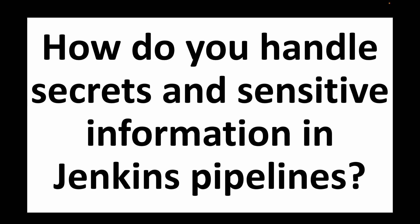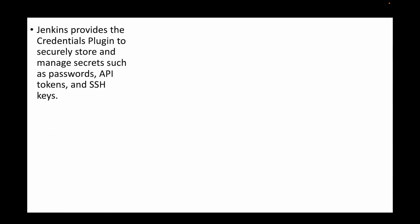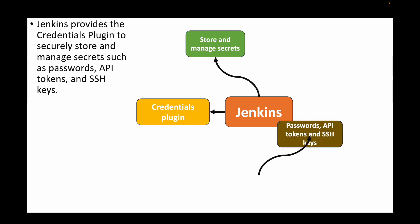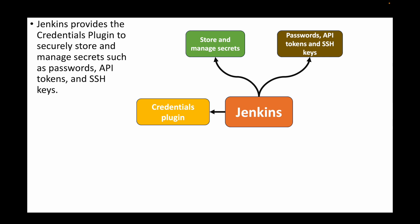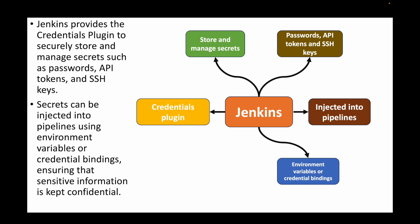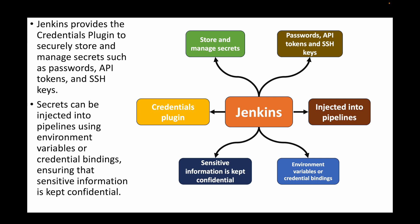The next question is: how do you handle secrets and sensitive information in Jenkins pipelines? Jenkins provides a credentials plugin to securely store and manage secrets — passwords, API tokens, SSH keys, or any sensitive information. We can then inject these secrets into pipelines using environment variables or credential bindings, ensuring sensitive information is kept confidential and not stored in plain text.